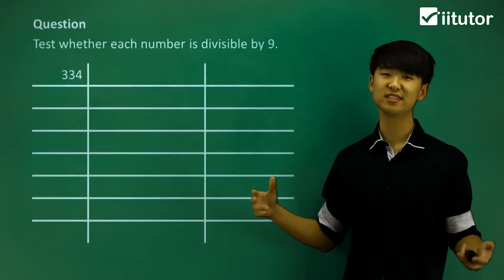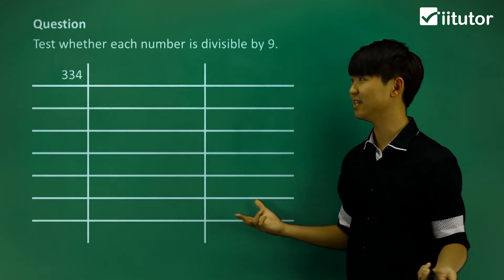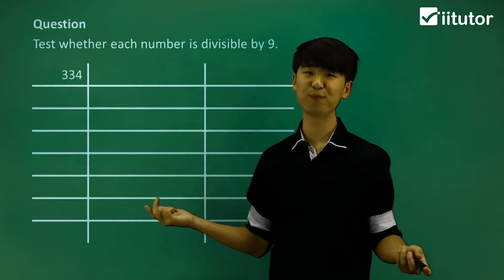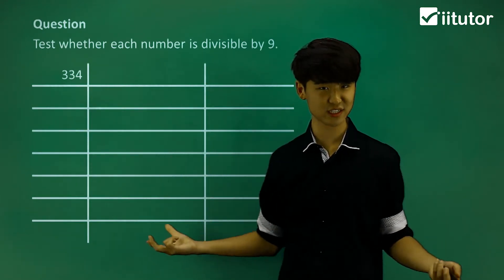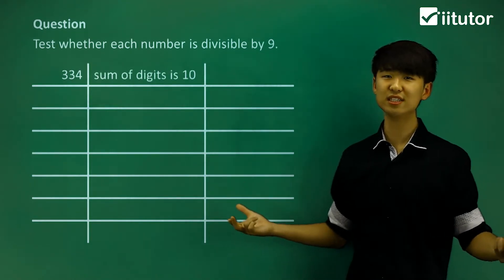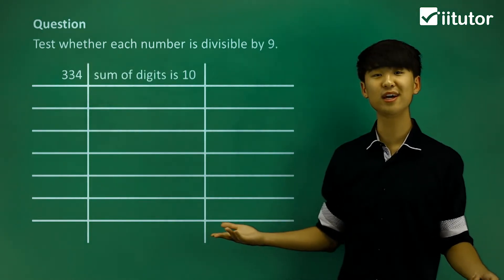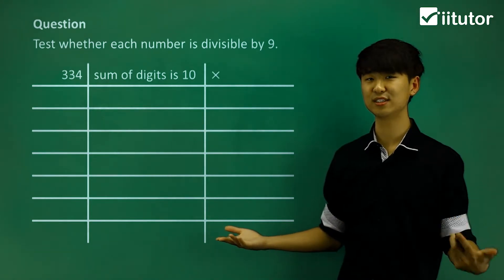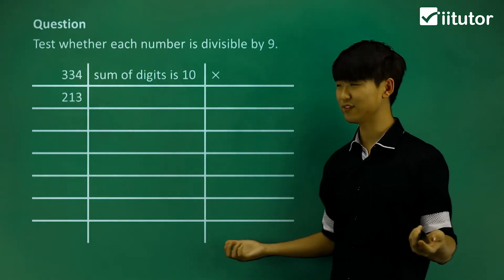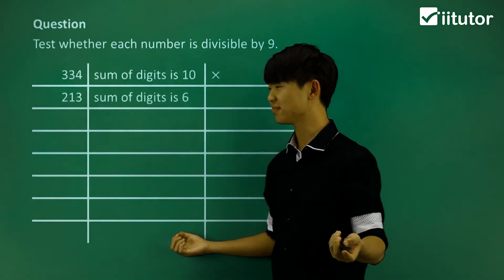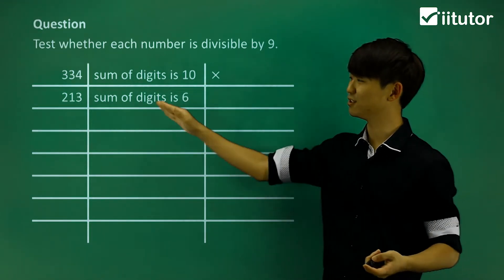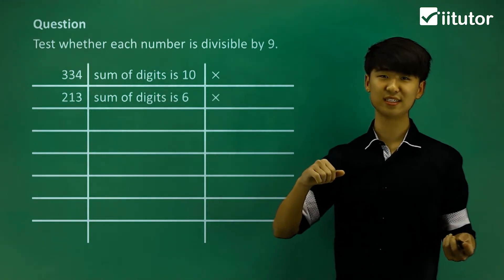So let's test this and see if the numbers here are divisible by 9. The first number is 334. If we take a look at the sum of the digits in 334, the sum of digits is 10. Now 10 is obviously not divisible by 9, so this number is not divisible by 9. Next, 213: the sum of digits is 6. Now 6 is not divisible by 9, so 213 is not divisible by 9.